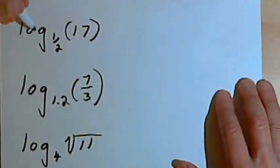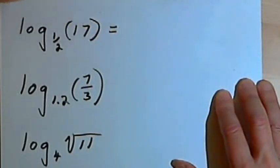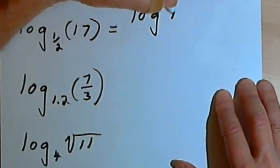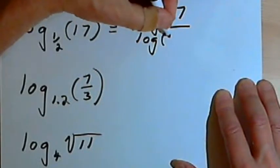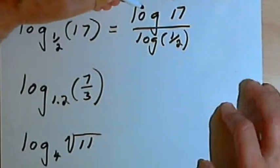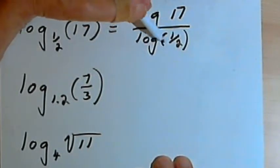So here I've got the log base 1/2 of 17. I'm going to take that and turn that into the fraction the log of 17 over the log of 1/2. And then to find out what that equals, in my calculator I would enter the log of 17 divided by the log of 1/2.